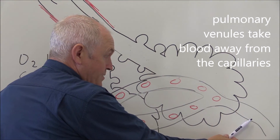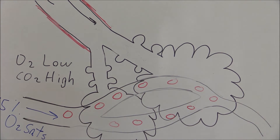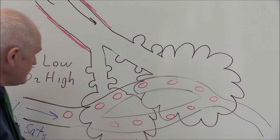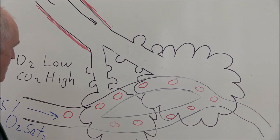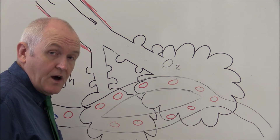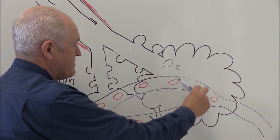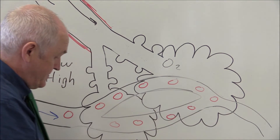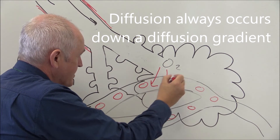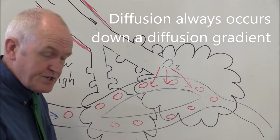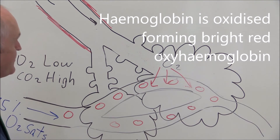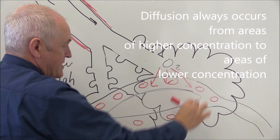The venule joins together with other pulmonary venules, eventually forming branches of the pulmonary vein to take blood back to the left atrium. The oxygen in the alveoli is relatively high, but the oxygen in the blood is relatively low. This means there's a higher concentration of oxygen in the alveolar air than in the blood, so oxygen will move down its diffusion gradient into the blood, where it mostly becomes associated with the hemoglobin molecules in the red cells.